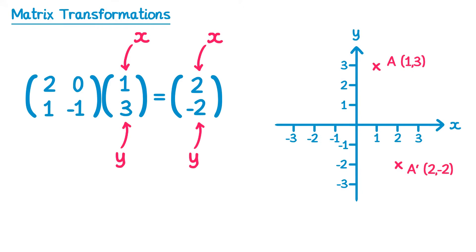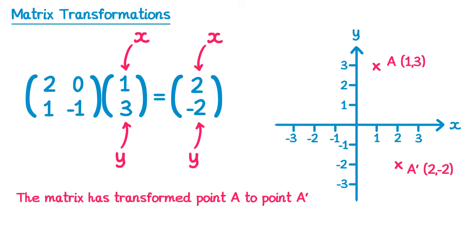So what we've shown here is that if you take a point (1, 3) and multiply it by the matrix [2 0; 1 -1], you end up with the point (2, -2). This is equivalent to saying that the matrix has transformed point A to point A dashed. In this diagram, the point A is known as the object — it's the point we started with — and the point A dashed is the image, the point we end up at.